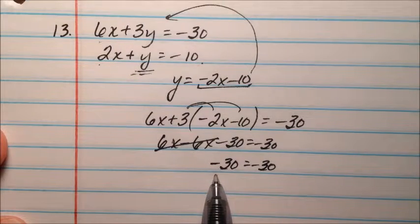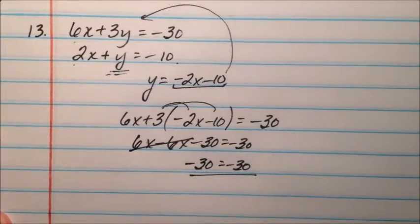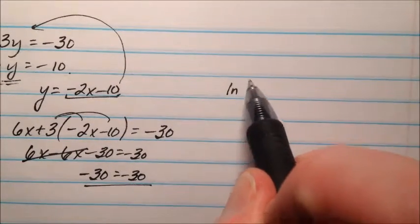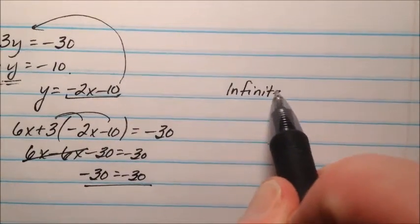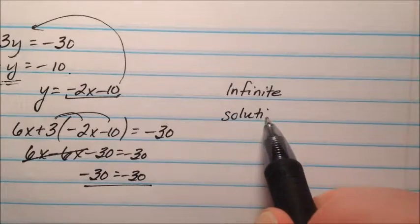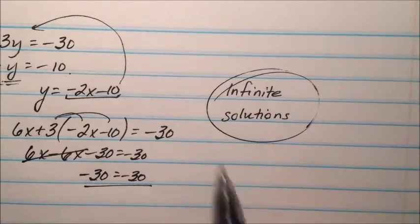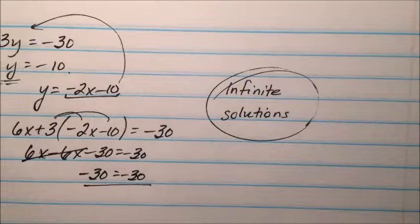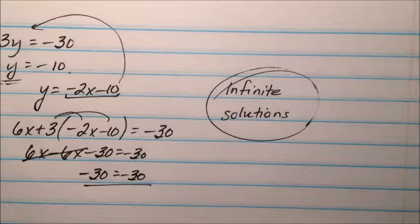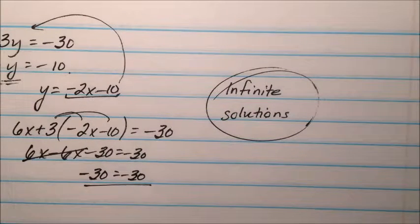Since all the variables canceled out and we were left with a true statement, there are going to be infinite solutions because the lines are coincident — they are on top of each other, they are the same line. If you're going to classify this, it would be consistent and dependent, since the lines are the same. We also call those coincident lines.